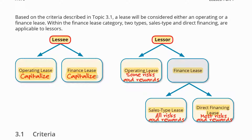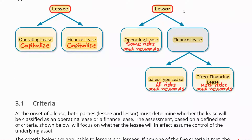What about the lessor? For the lessor, if any of the OWNS has been met, this is a sales-type lease. If none of the OWNS has been met, then it's an operating lease for the lessee, but for the lessor it might be either a direct financing lease or an operating lease. To determine whether it's a direct financing lease or an operating lease, it depends on whether two additional conditions — P and C — have been met.